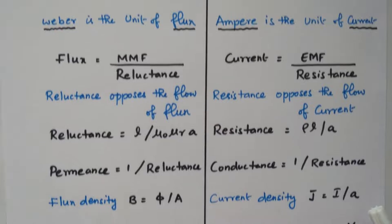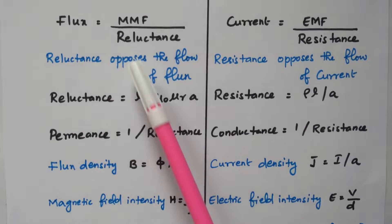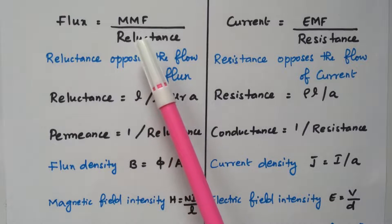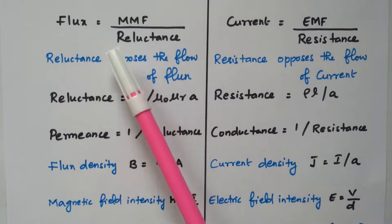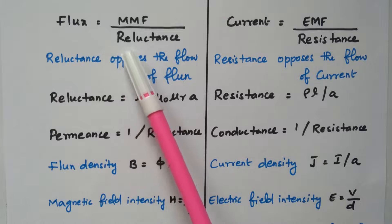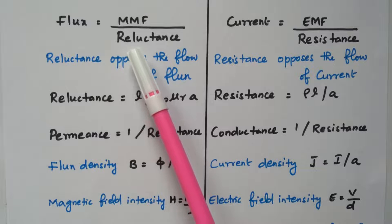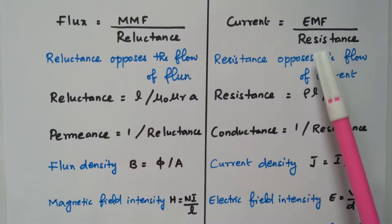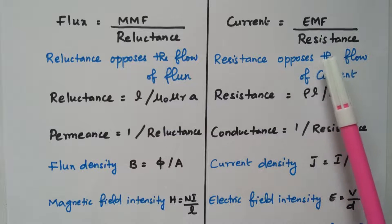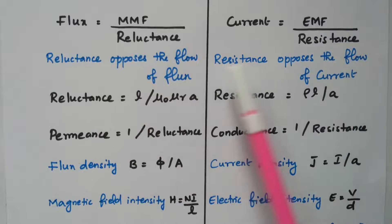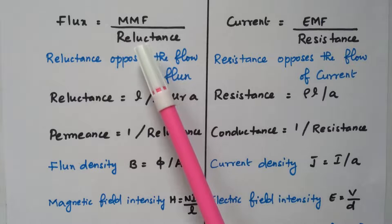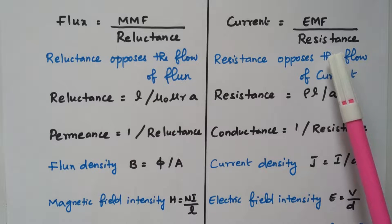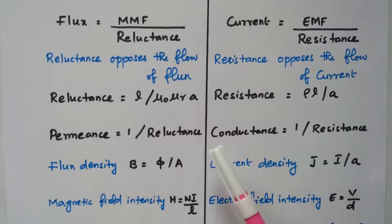Flux is given by: flux = MMF / reluctance. Similarly, current is given by: I = EMF / resistance. So MMF divided by reluctance is analogous to EMF divided by resistance.